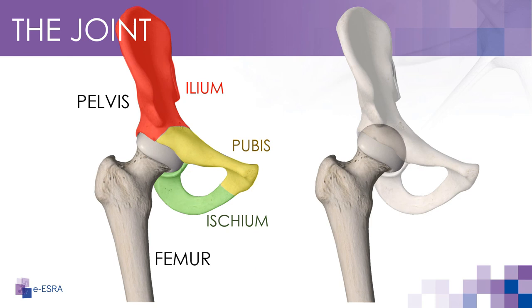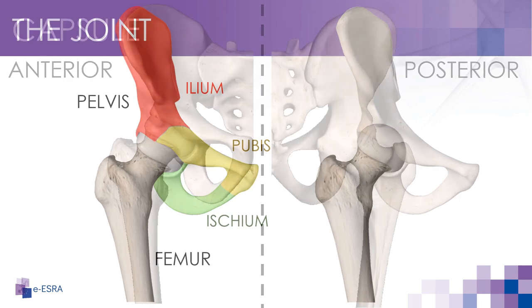The ball of the hip joint is made by the femoral head while the socket is formed by the acetabulum. The stability of the hip is provided by the joint capsule or acetabulum and the muscles and ligaments that surround and support the hip joint.